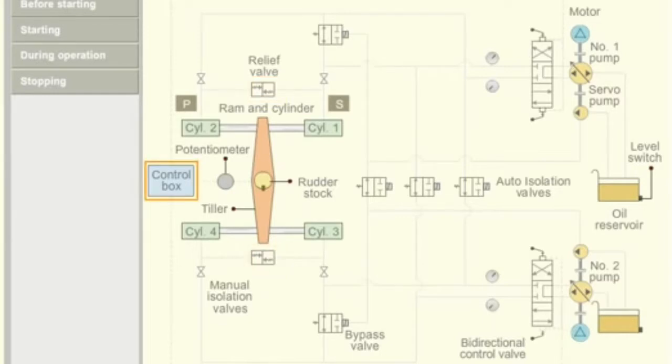The control box receives helm order from bridge and sends electric signals to directional control valve. Pressurized hydraulic oil is supplied to the cylinders. The tiller arm converts the linear motion of the RAMs into rotary motion of the rudder stock. Potentiometer senses the rudder stock position and sends feedback to control box.